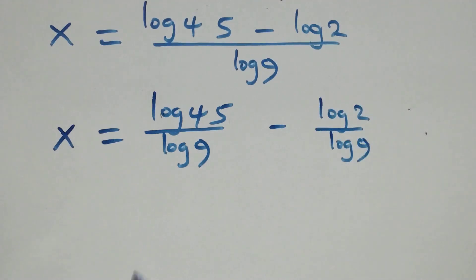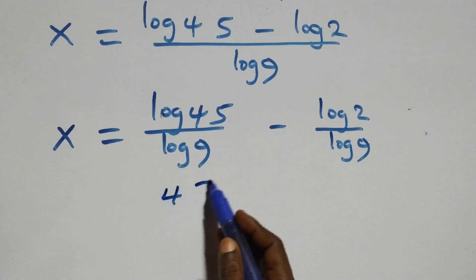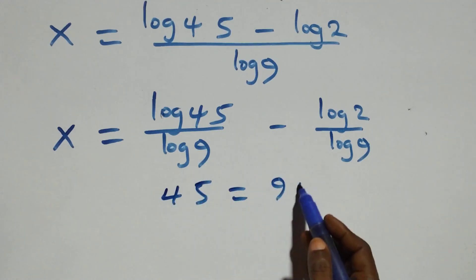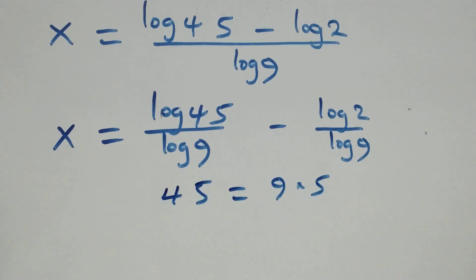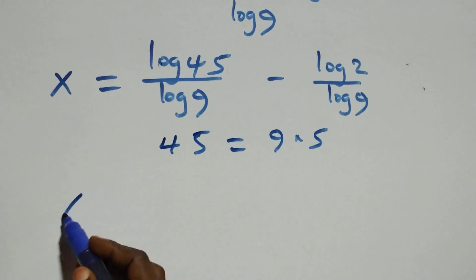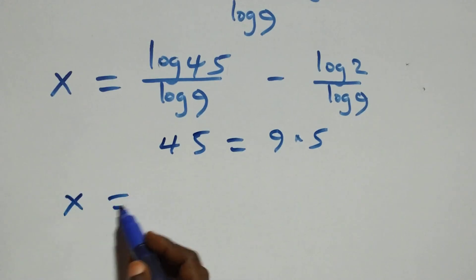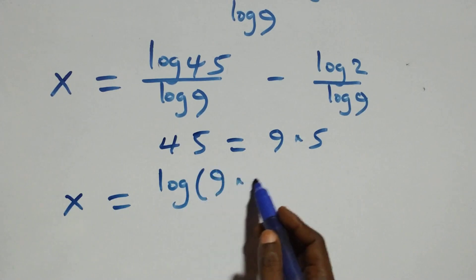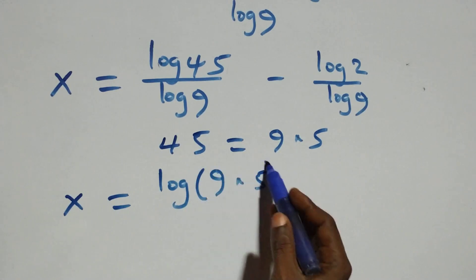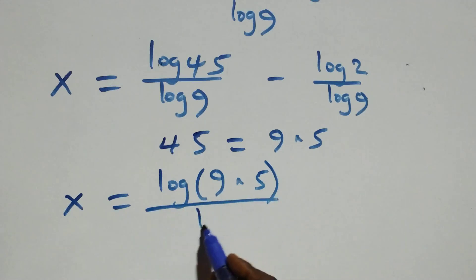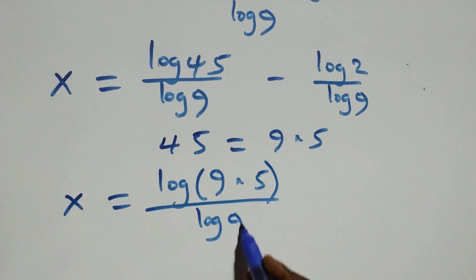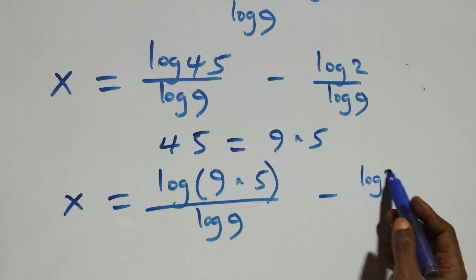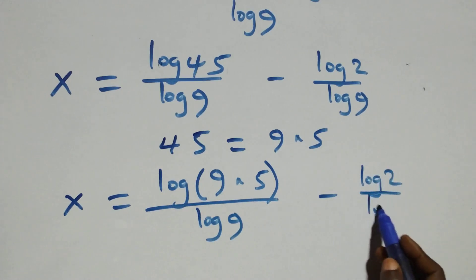Then, from here, we can express 45 as 9 times 5. So what we have here becomes x equals to log(9 times 5) over log 9 minus log 2 over log 9.